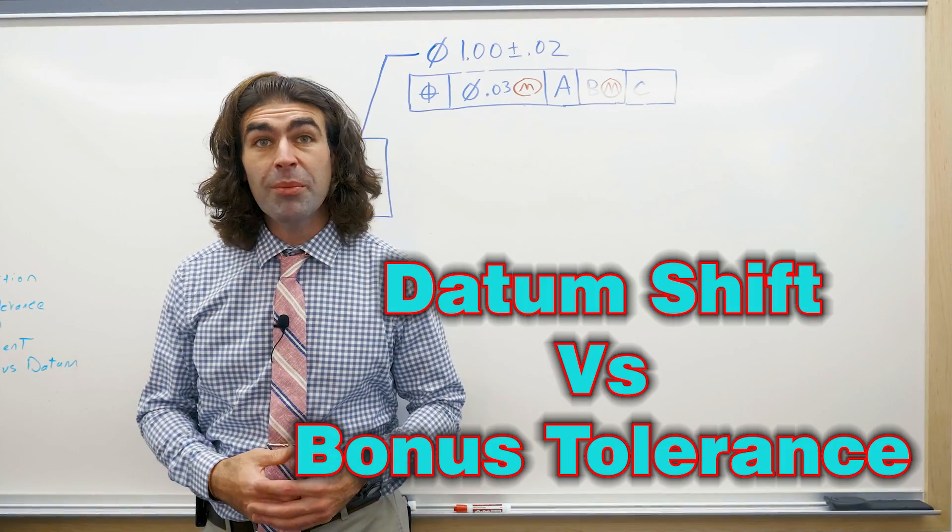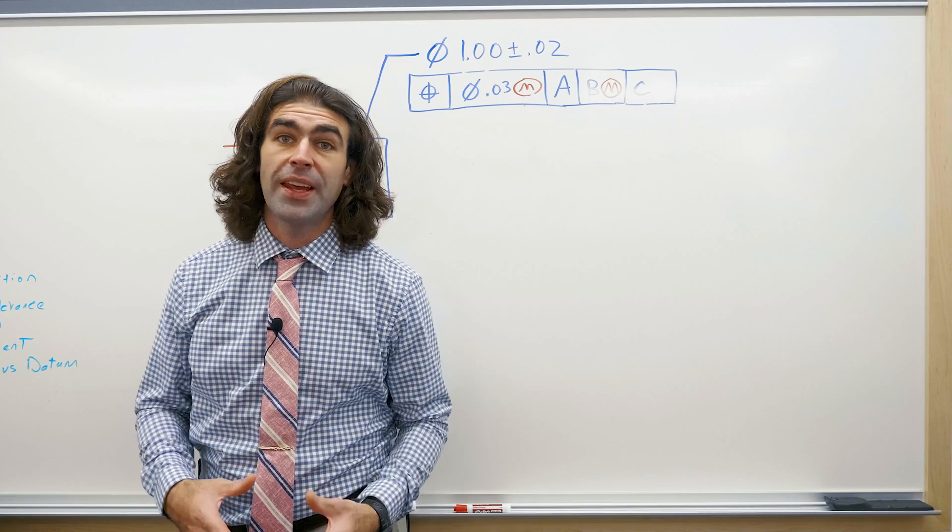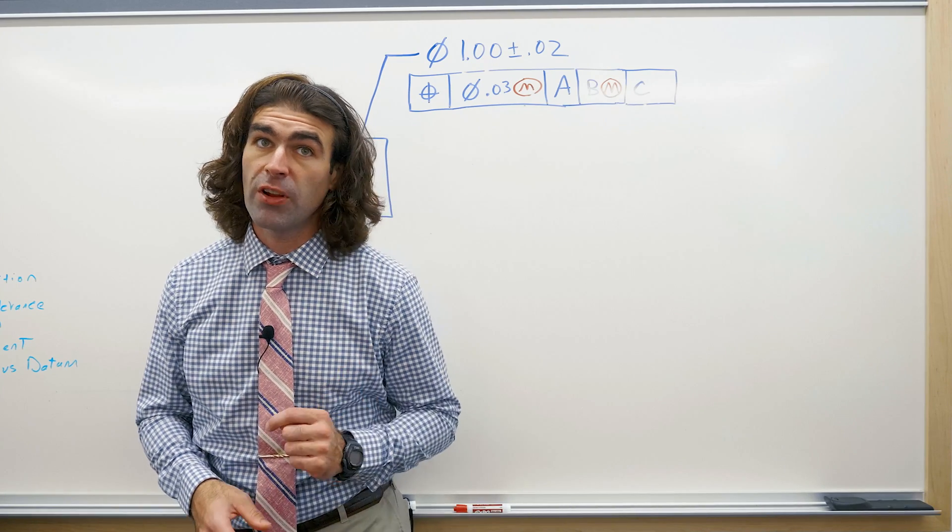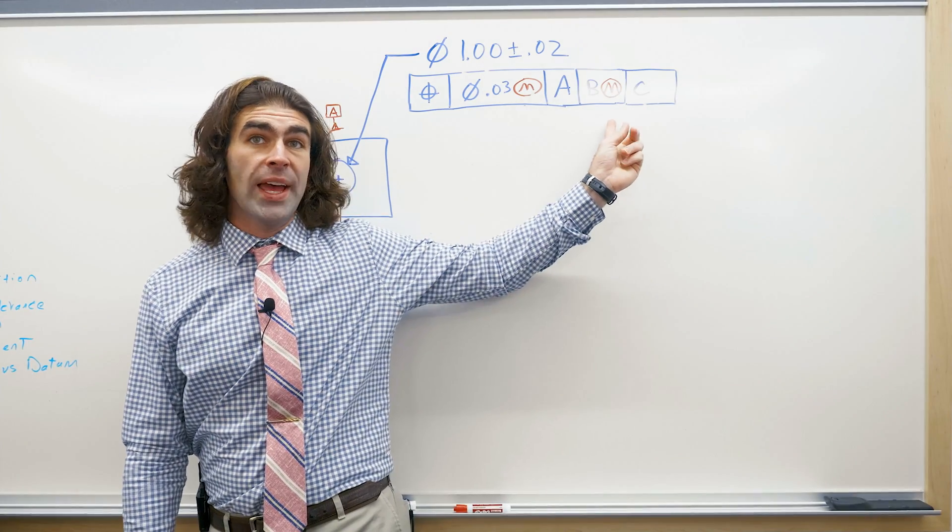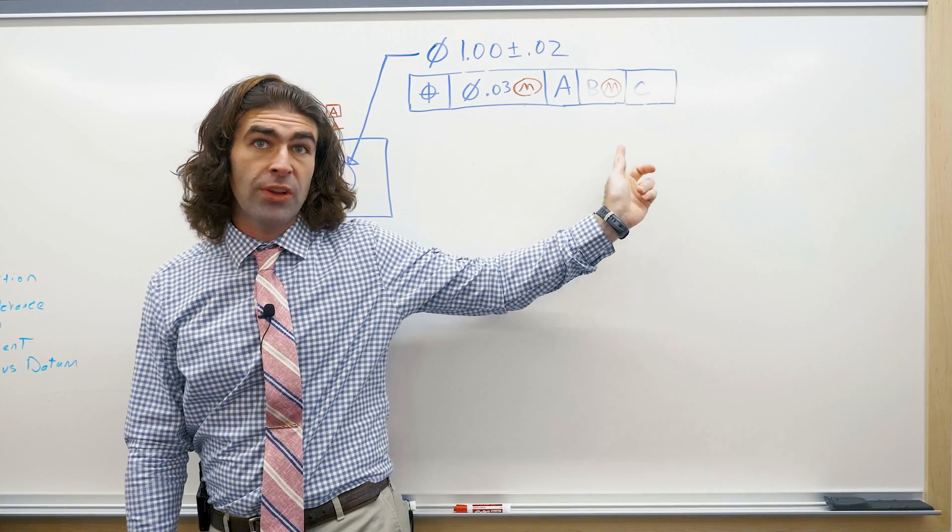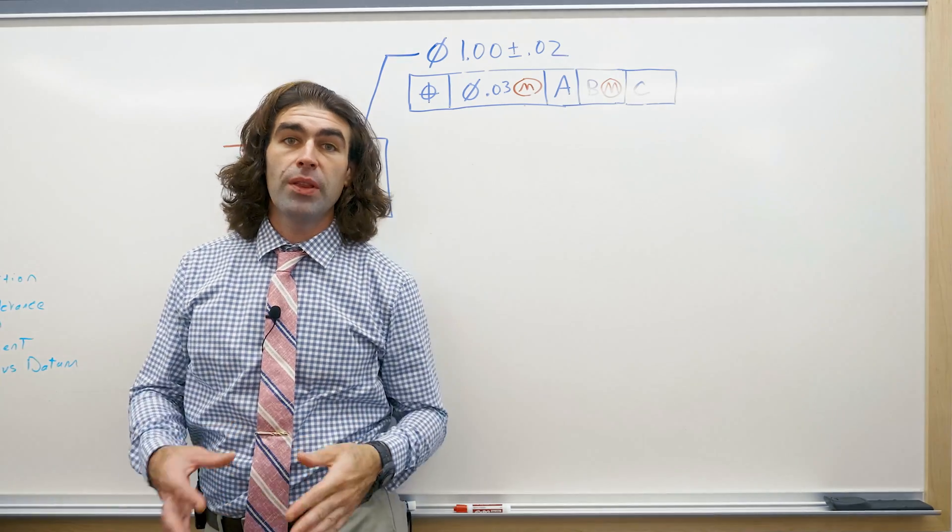In this video I'm going to chat about material condition modifiers with the datum feature references in your feature control frame. So what I mean is this MMC symbol hanging out over here with the datums. It means something very different than the MMC symbol with the tolerance.